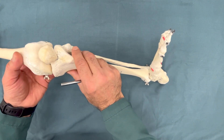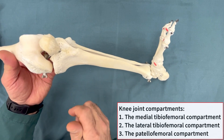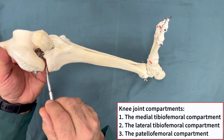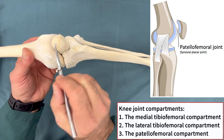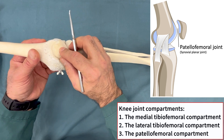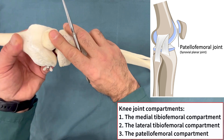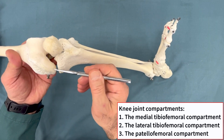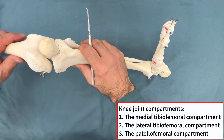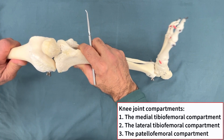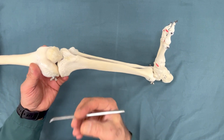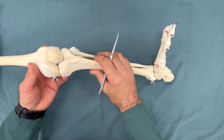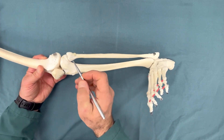The joint has three compartments: the medial tibiofemoral, the lateral tibiofemoral, and the patellofemoral joint. The patellofemoral joint between the patella and femur is a synovial planar joint with just gliding and sliding movements. However, the medial and lateral tibiofemoral compartments can have flexion, extension, and rotation movements — that's why the knee joint is a synovial modified hinge joint.